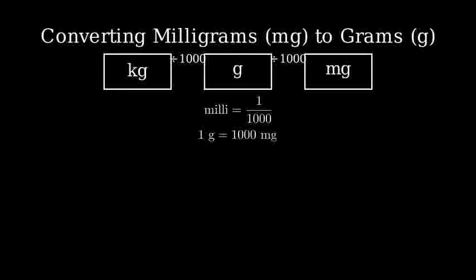Let's convert one milligram to grams using dimensional analysis. We'll start with one milligram and multiply it by our conversion factor. Our conversion factor is one gram over one thousand milligrams.